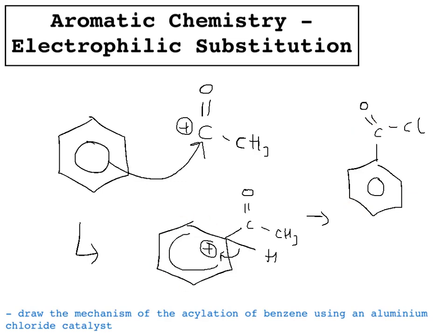The product is the same benzene ring — it doesn't matter that the molecule has been rotated. You also make H+, which was present in the second reaction with AlCl4−, so that's where the H+ comes from. I hope that's helped. Please email me if you have any more questions on electrophilic substitution. Thank you.